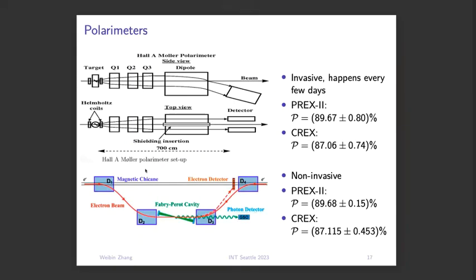The Wien filter sets up a non-zero horizontal spin direction because of spin precession in the accelerator. In order to get exactly horizontal polarization in Hall A, we need non-zero horizontal spin in the injector, which is done by the Wien filter. In Hall A, we have two polarimeters to measure polarization of the electron beam: one called Møller polarimeter, the other the Compton polarimeter. They use either Møller scattering or Compton scattering to measure the asymmetry and deduce beam polarization. Møller is more precise but invasive, while Compton is non-invasive and used to monitor polarization continuously.